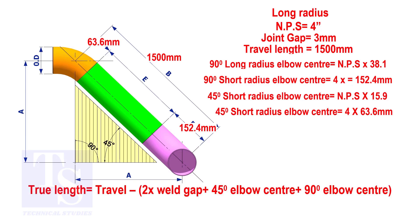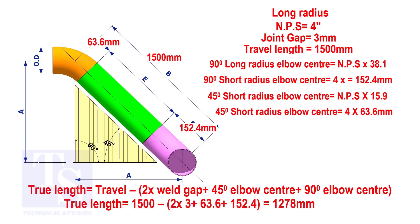Apply the calculation. The true length of the pipe is 1278 millimeters.